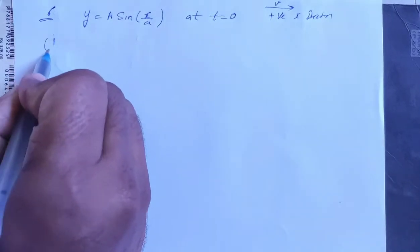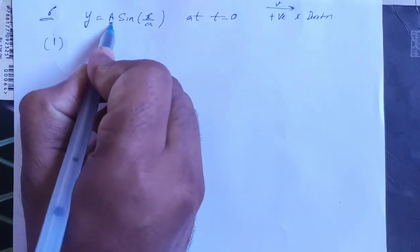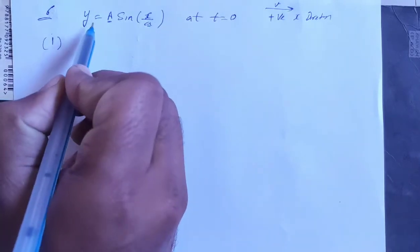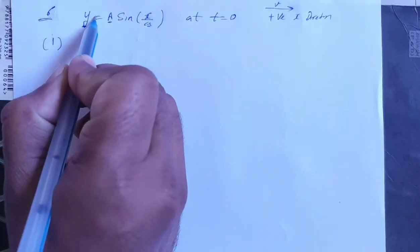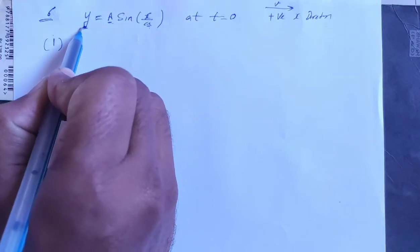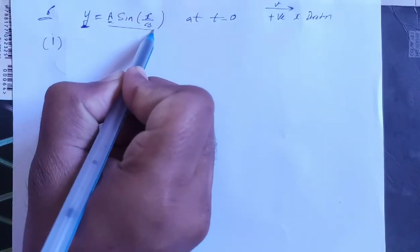The first question is to tell us the dimensions of capital A and small a. So here we can see y equals A sin(x/a). The dimension left side is the dimension right side.